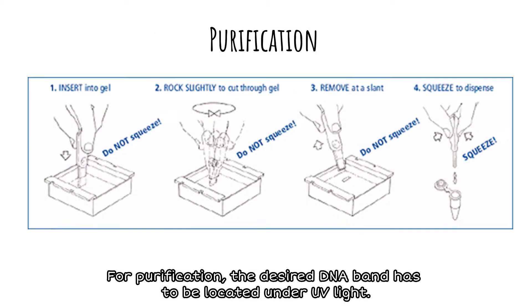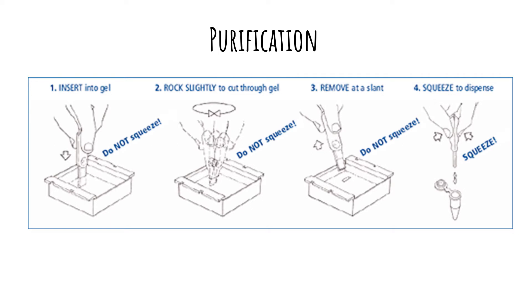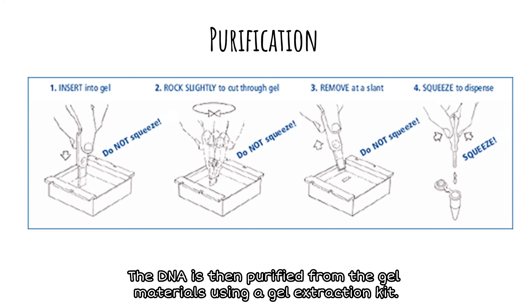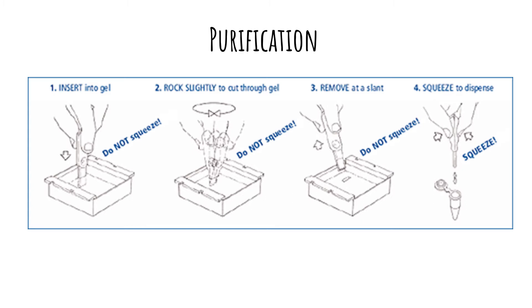For purification, the desired DNA band has to be located under UV light. It will then be cut out using the gel extraction tool. The DNA is then purified from the gel materials using a gel extraction kit.